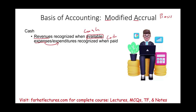The cash basis is not a GAAP method. So when you took Intermediate Accounting 1, Intermediate 2, or Advanced Accounting, you did not use cash basis. What you used is accrual, or full accrual.